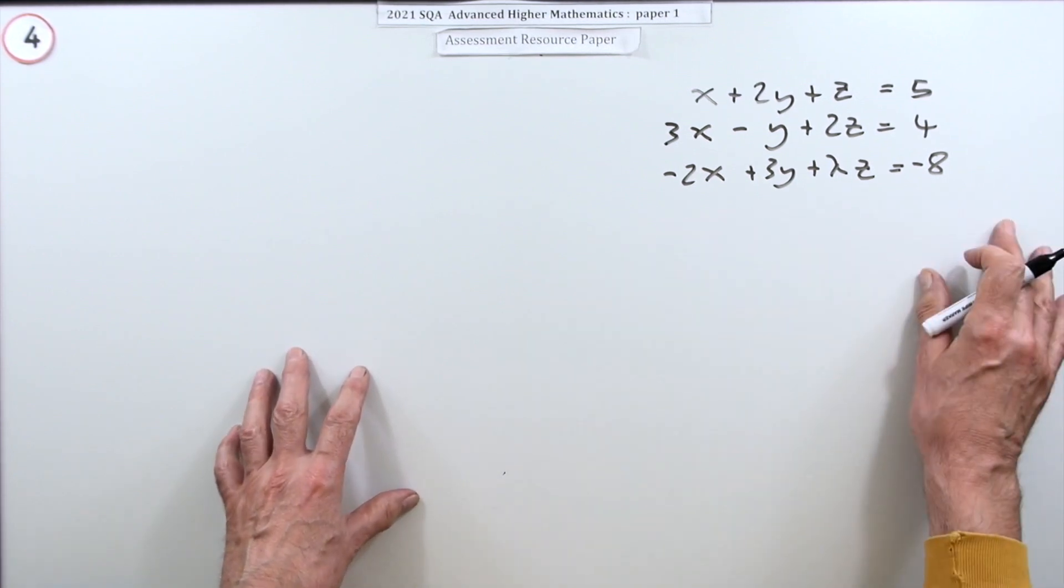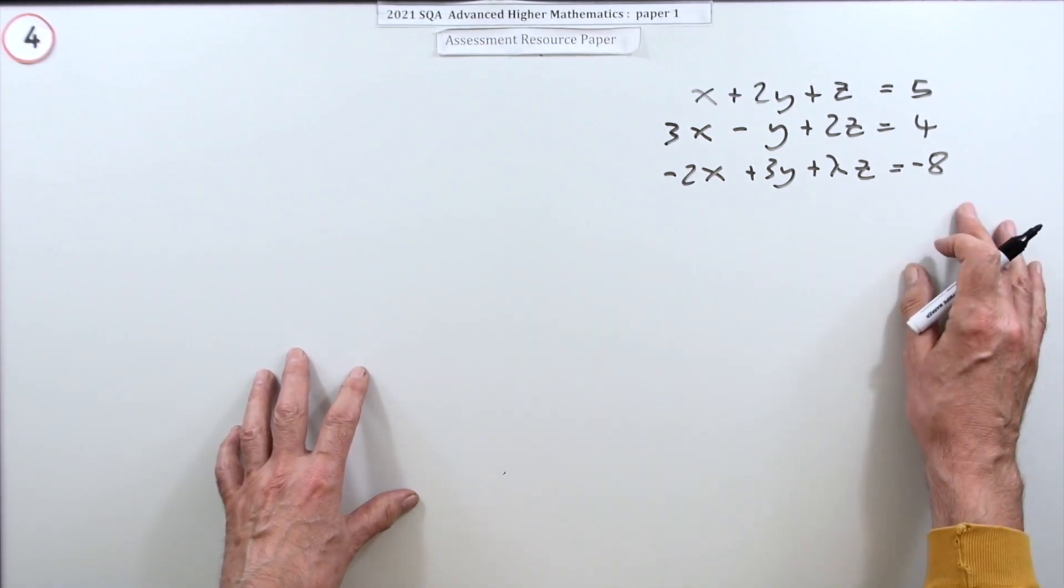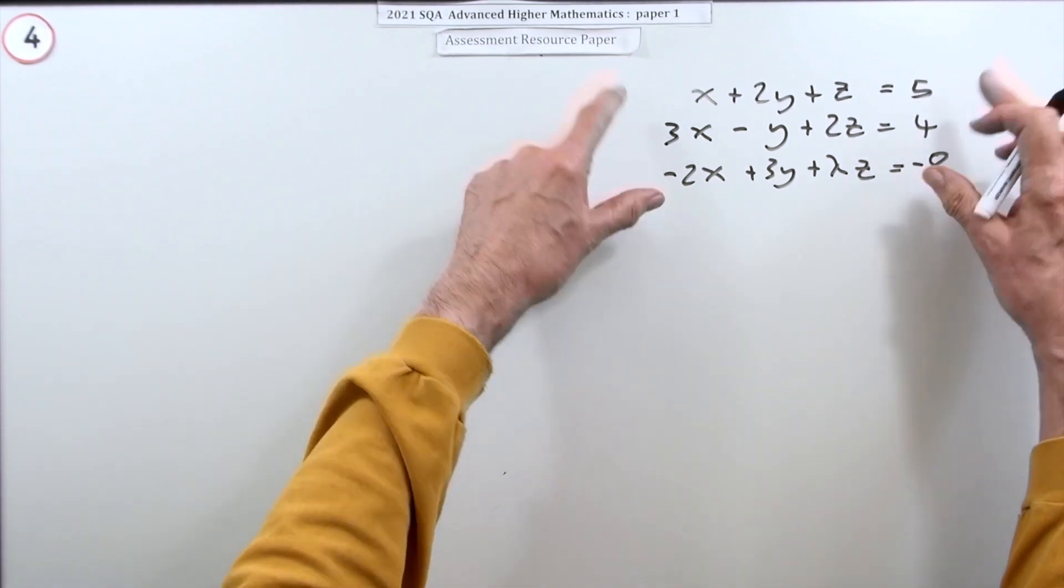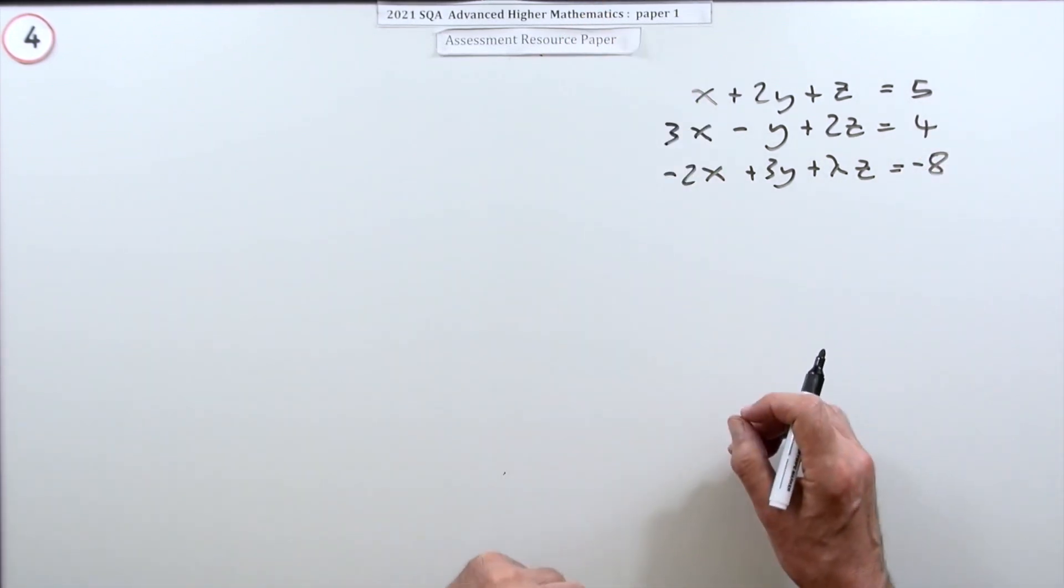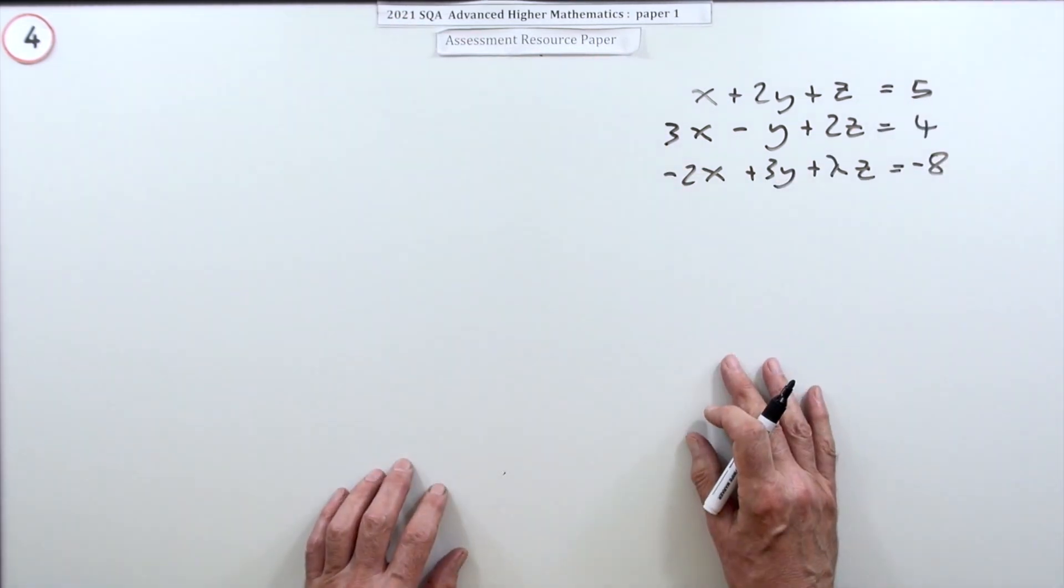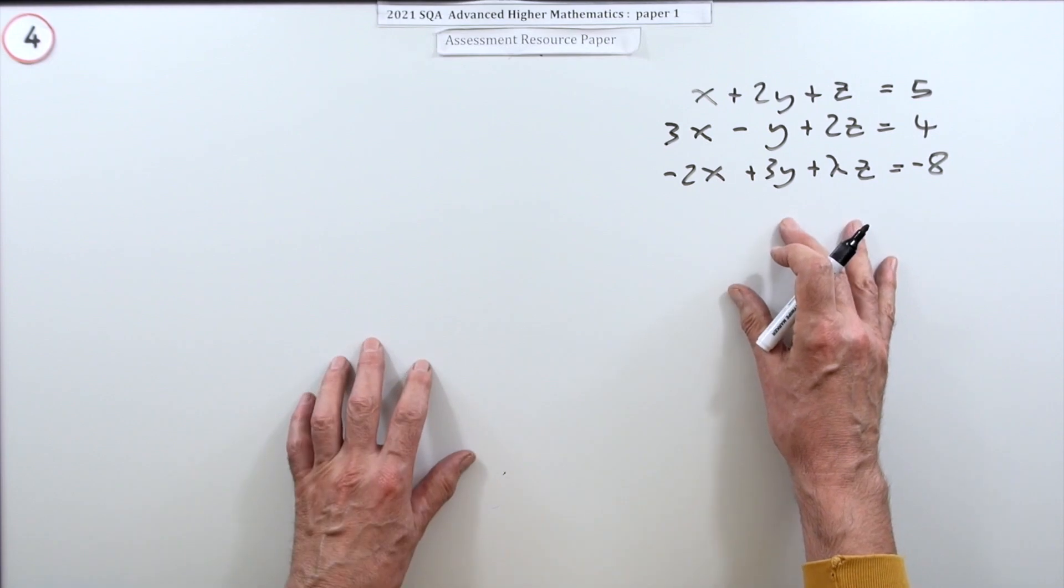It's just a system of equations. You used to get that in the higher. And the way you can solve that is you just take them in pairs, multiply them appropriately so when you combine them one of the variables disappears. Then you get it down to two variables. Then you just do the same again. And Gaussian elimination is really just a shorthand of that.